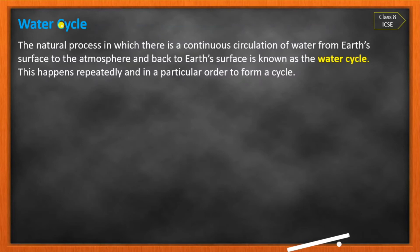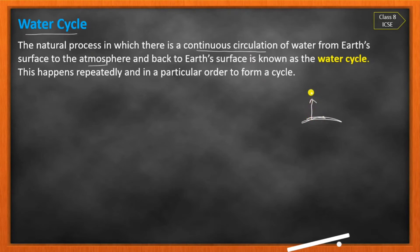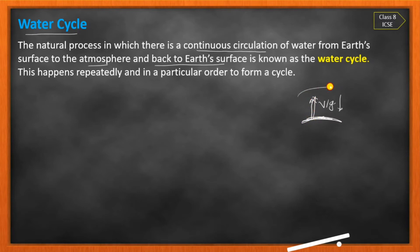Now we will see what is the water cycle. The water cycle is a natural process in which there is a continuous circulation of water — from the Earth's surface to the atmosphere and back. Water from the surface evaporates as vapour, goes into the atmosphere, and then comes back to the Earth's surface. This process happens repeatedly and in a particular order, making it a cycle.